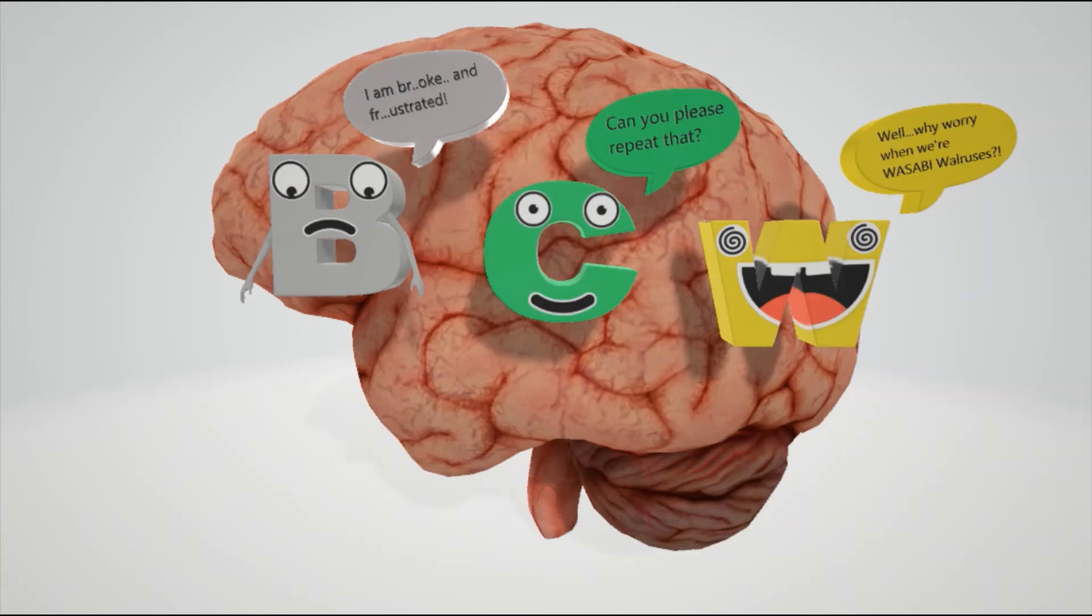Then there's global aphasia, which affects both Wernicke's area and Broca's area, as well as the arcuate fasciculus.